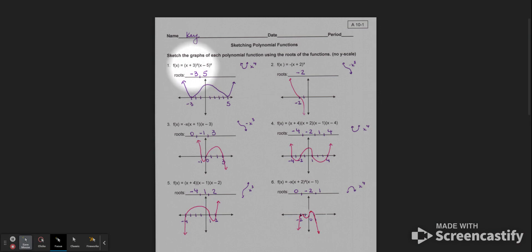Notice that we have x plus 3 squared, x minus 5 squared. So the multiplicity over here is 2 on both of them. That means we're going to have just a quadratic function right here, just a little smiley face going through negative 3, and another one that goes there at 5, because negative 3 and 5, they're my roots.